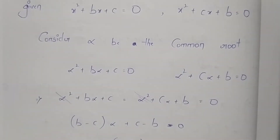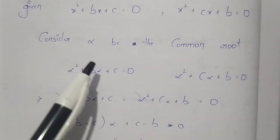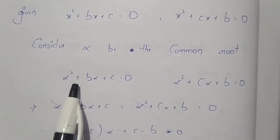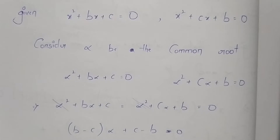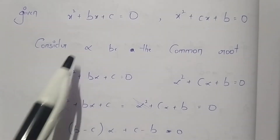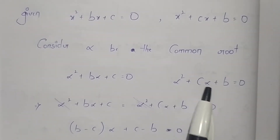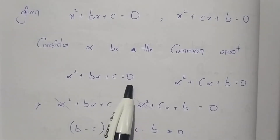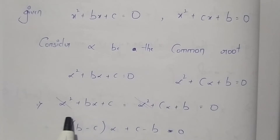If alpha is a common root, it must satisfy both equations. Substituting alpha into the first equation gives: alpha squared plus b·alpha plus c equals 0. Substituting alpha into the second equation gives: alpha squared plus c·alpha plus b equals 0.